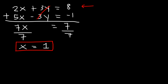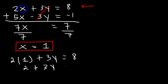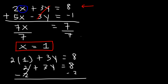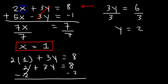Now that we have x, let's plug it into the first equation. Replacing x with 1: 2 times 1 plus 3y equals 8. That gives us 2 plus 3y equals 8. Subtracting 2 from both sides: 3y equals 6. Dividing by 3, y equals 2. So the solution as an ordered pair is (1, 2).